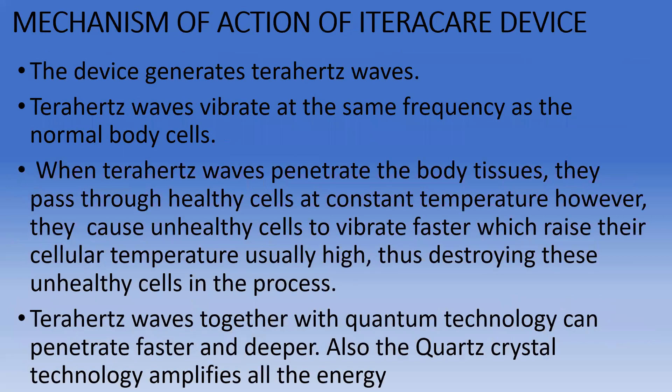What's the mechanism of action of the iTeraCare device? The device generates terahertz waves, which vibrate at the same frequency as normal body cells. When these terahertz waves penetrate through body tissues, they pass through healthy cells at a constant temperature. However, they cause unhealthy cells to vibrate faster, raising their cellular temperature and destroying the unhealthy cells in the process. The terahertz wave together with quantum technology can penetrate deeper and faster, and the quartz crystal technology amplifies all the energy.